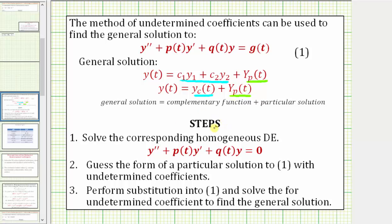The steps we'll follow are: step one, solve the corresponding homogeneous differential equation by setting the right side equal to zero, which gives us the complementary function y sub c of t. Step two, guess the form of a particular solution to the original differential equation based upon the form of g of t with undetermined coefficients. Step three, perform substitution into the original differential equation and solve the undetermined coefficients, giving us big Y sub p of t, and then use these two functions to form the general solution.